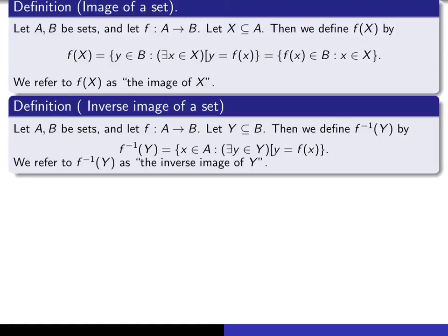Now let's look at the definition of inverse image of a set. Once again, we have a function from set A to set B. This time we give ourselves a subset of the codomain B. So Y is a subset of the codomain B. Then we're going to define what we mean by f inverse of Y. f inverse of Y is a certain subset of the domain.